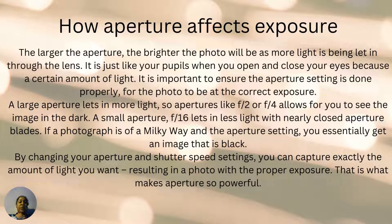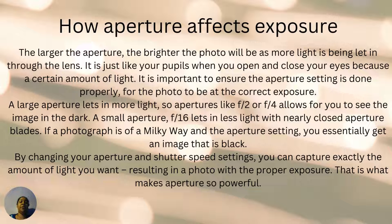Aperture is like when your pupils open and close because a certain amount of light is present. It is more important to ensure that the aperture setting is done properly for the photo to be at the correct exposure. A large aperture lets you have more light in the photo — aperture settings like f/2 allow you to see the image in the dark. With aperture you can do more things because it doesn't necessarily consist of time; it consists of how bright the photo is.